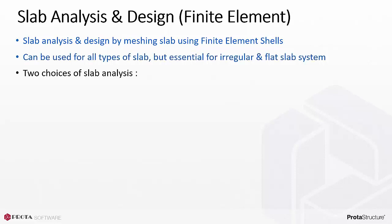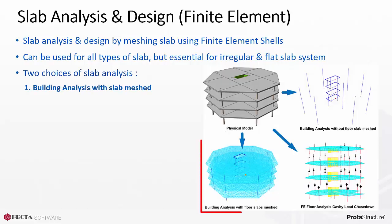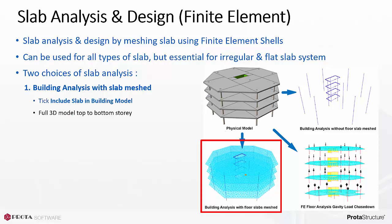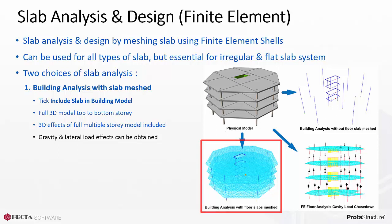There are two choices of slab analysis. The first is building analysis with slab meshed, which includes slabs and the building model. This assumes a full 3D analytical model from top to bottom story, so the inherent 3D effect of multiple stories is included. Both gravity and lateral load effects can be obtained.